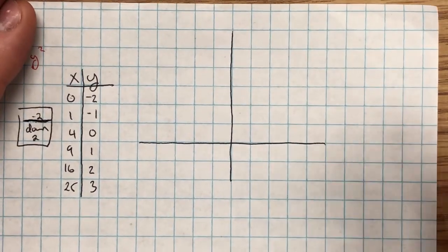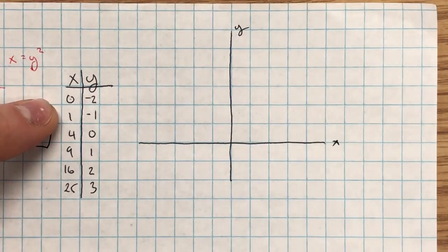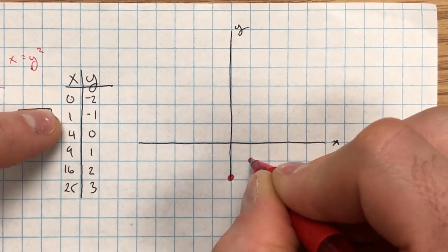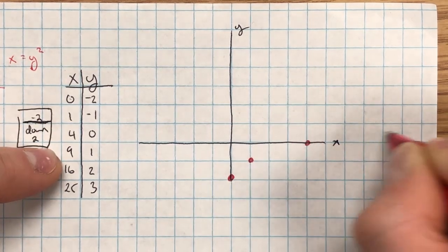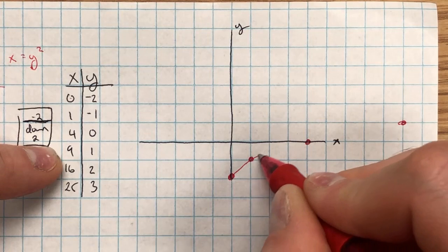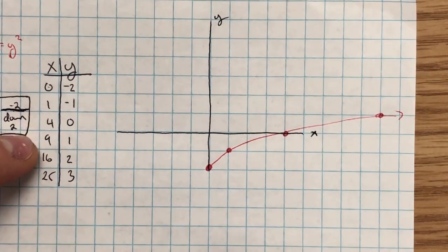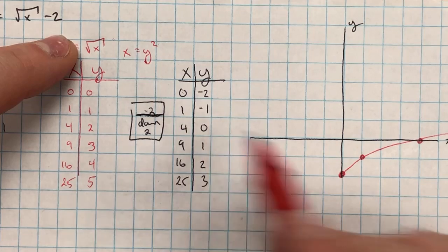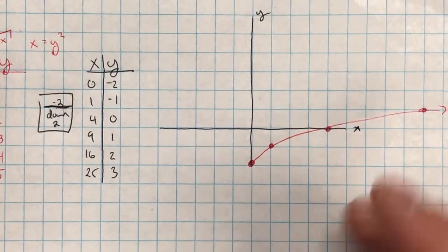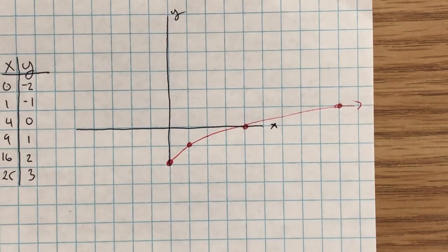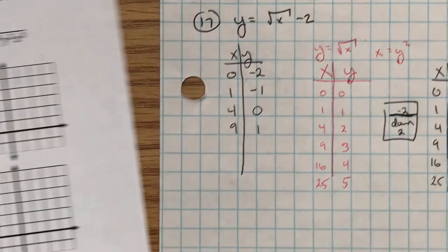Plotting these points: (0, -2), (1, -1), (4, 0), (9, 1) and so on. I can't plug in negative x-values — for example, √(-1) leads into the complex plane and won't appear on this real-number graph. So the leftmost point is at x = 0, and the graph extends rightward with an arrow in that direction, but no arrow to the left.